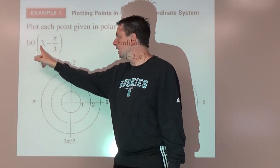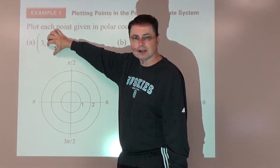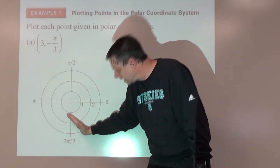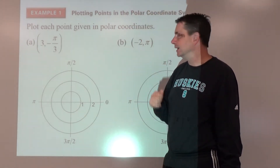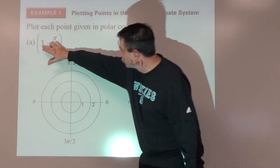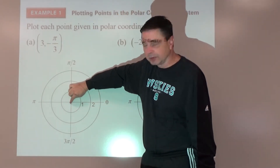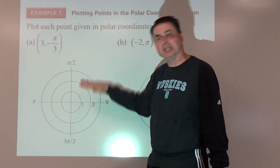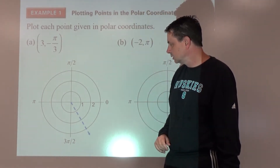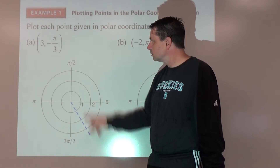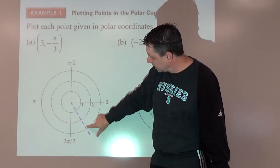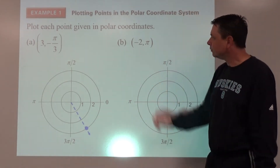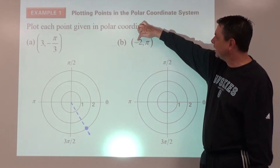For part a, we want to go three units away at angle negative pi over three. Negative pi over three means we rotate clockwise down into quadrant four. We rotate down to where pi over three would be in the negative direction, so we see the angle negative pi over three and then place the point three units away from the origin.